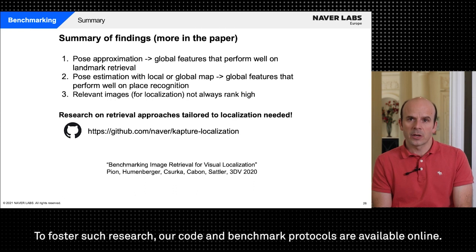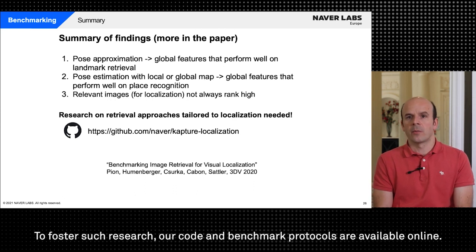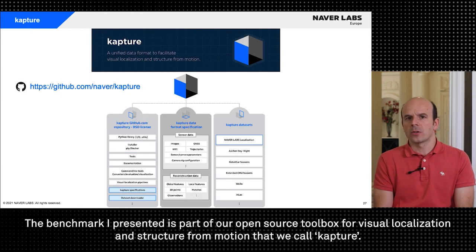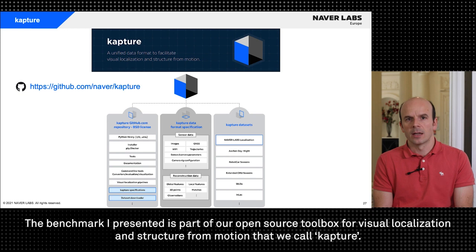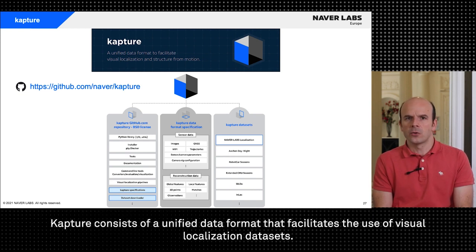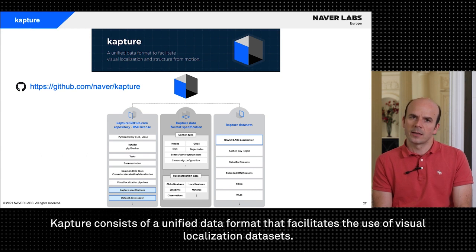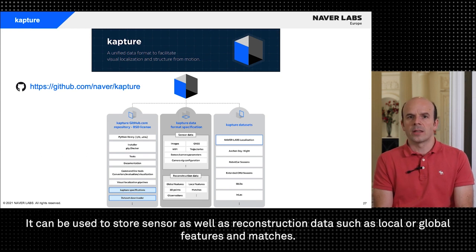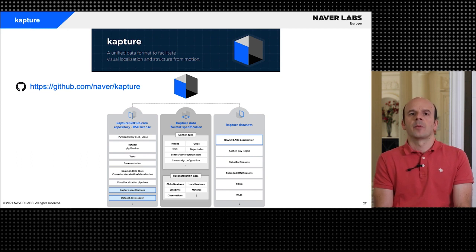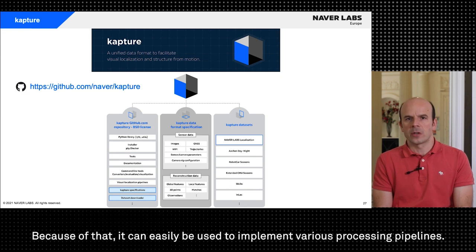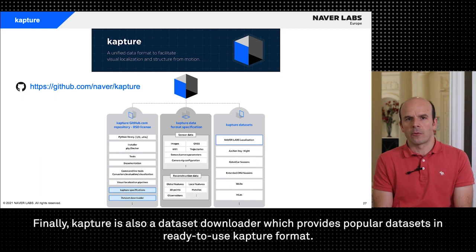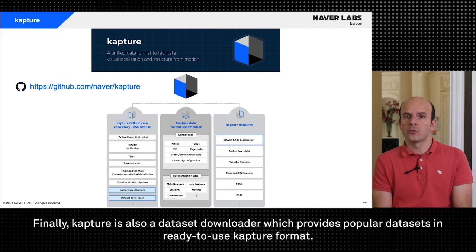The benchmark I presented is part of our open source toolbox for visual localization and structure from motion that we call Capture. Capture consists of a unified data format that facilitates the use of visual localization datasets. It can be used to store sensor as well as reconstruction data such as local or global features and matches. Because of that it can easily be used to implement various processing pipelines. Finally Capture is also a dataset downloader which provides popular datasets in ready to use Capture format.